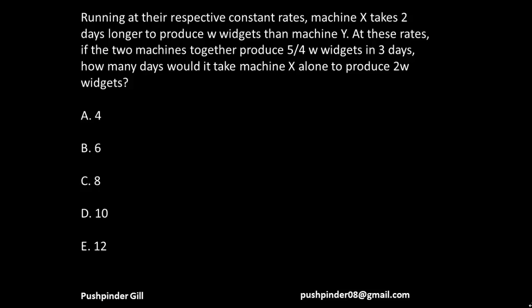Let's see this question. The question says that running at respective constant rates, machine X takes two days longer to produce W widgets than machine Y. At these rates, if two machines together produce 5/4 W widgets in three days, how many days would it take machine X alone to produce 2W widgets?